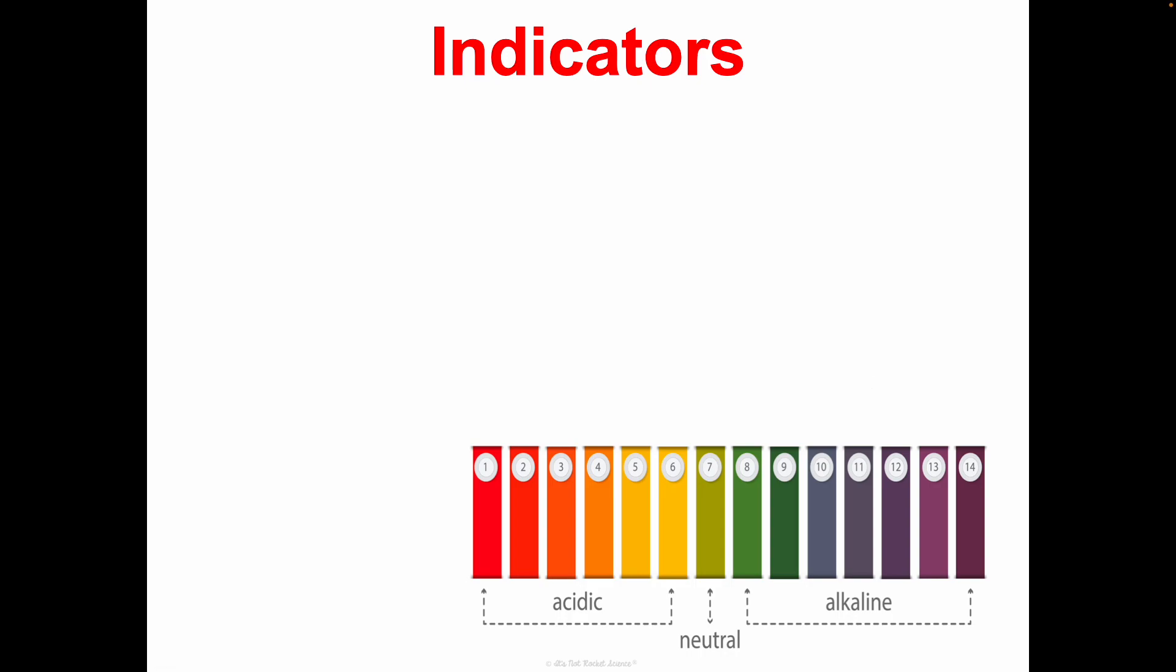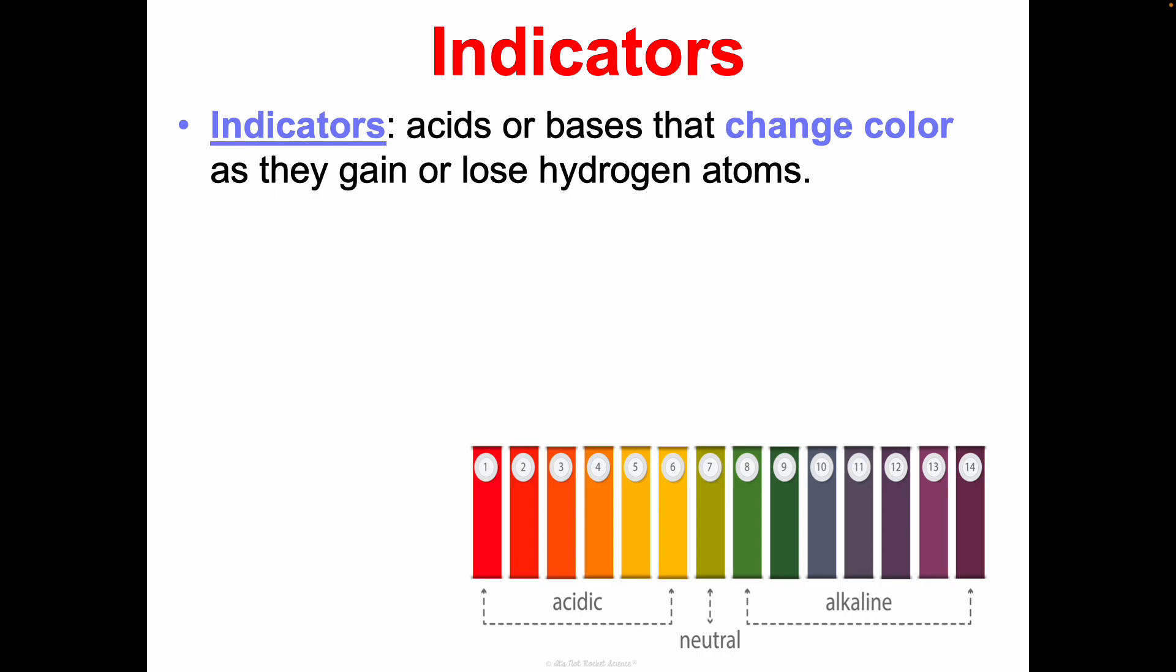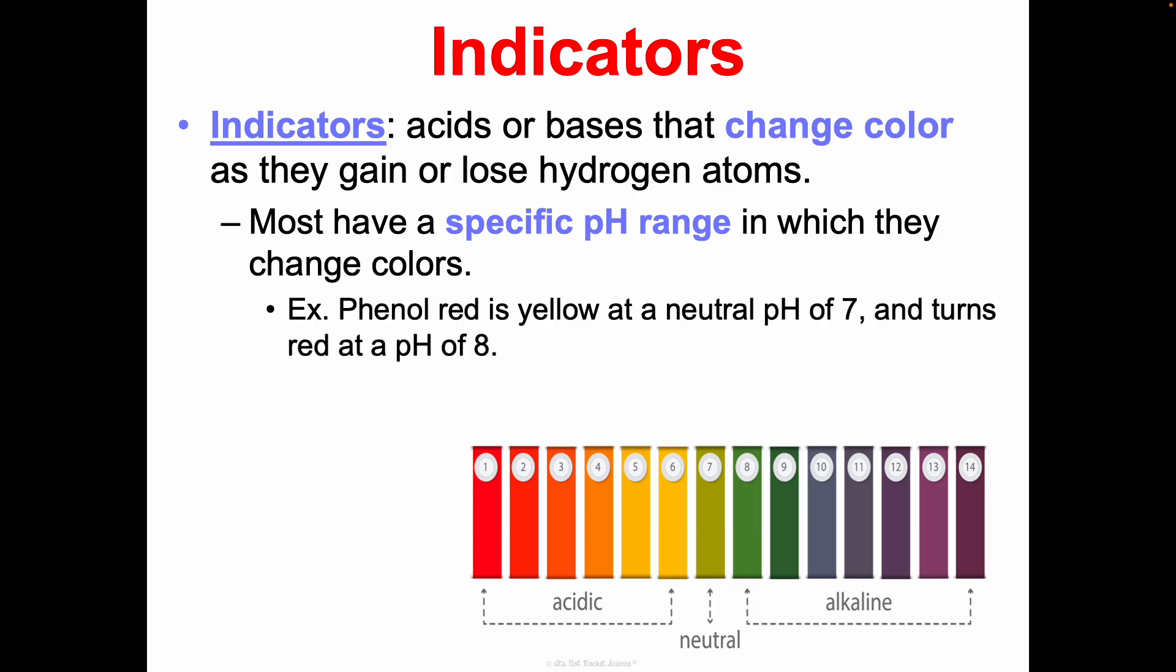I mentioned indicators in our last unit. We talked about how you may have used indicators before when you are testing the pH of a pool or something like that. But an indicator is just an acid or a base, and it changes color as it gains or loses hydrogen atoms. And most have a really specific pH range in which they change colors. For example, phenyl red is an indicator. It's yellow at a pH of 7, and then it turns red at a pH of 8. So you can use phenyl red to indicate when something gets more basic. The universal indicator is the one that covers the whole scale. And so it changes all of these different colors from 0 to 14 that we can use. 7 is kind of like a yellowish green or neutral. And then we get more and more red as we move down the acidic scale, and we get more and more blue and purple as we move down the alkaline scale in terms of looking at the universal indicator.